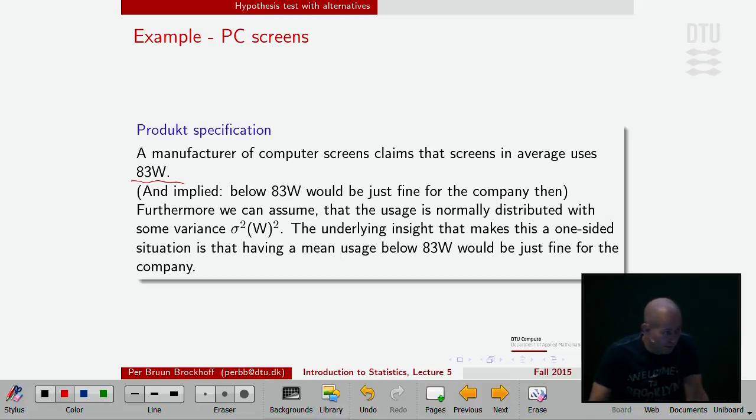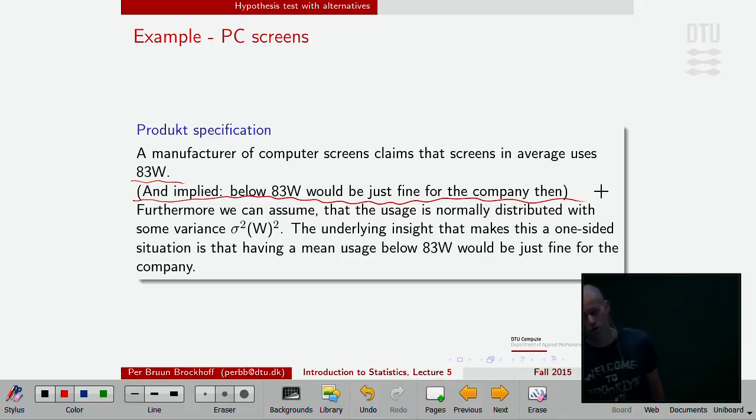What if they claim that they use 83 watts? Sorry for this probably being a pretty old example in terms of real-life numbers. And then implied, that's a new thing now in my little example, implied that when they claim 83, they are home safe if it's smaller. So it's really a one-sided claim. It's 83 or below, really. That's their claim. But 83 is kind of the worst case. It's not above 83 would be their claim, right?